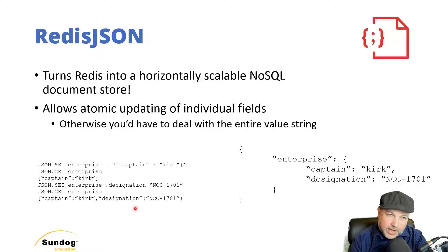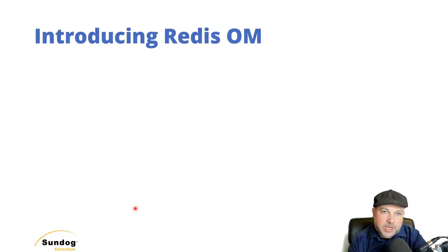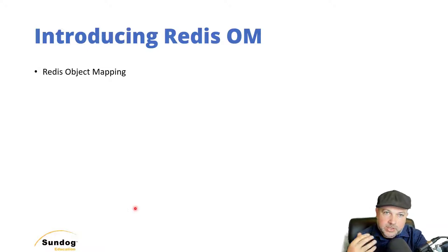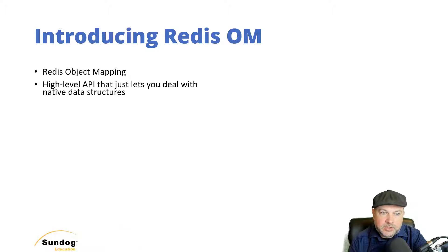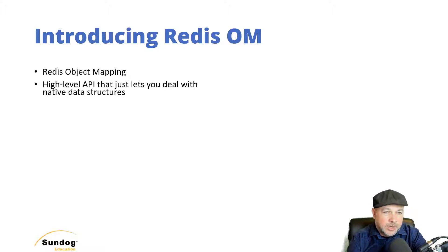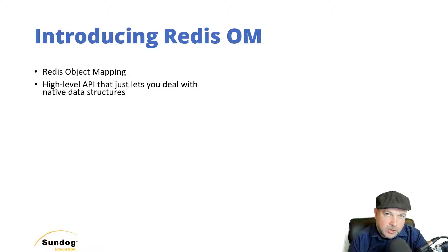It's just that simple. Now to actually use that, you could use the command line interface, either directly or through a lower-level API like Redis PY. But there's also something called Redis OM — a high-level API to Redis that wraps the complexity of Redis JSON and Redis Search, so you don't really have to think about how it works under the hood. It stands for Redis Object Mapping, and it just lets you deal with native data structures.